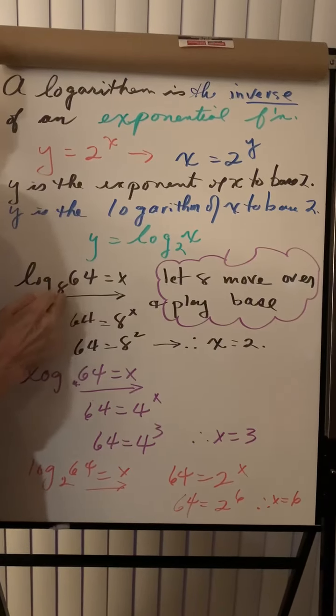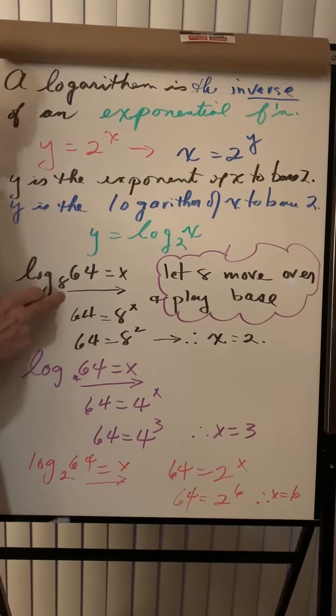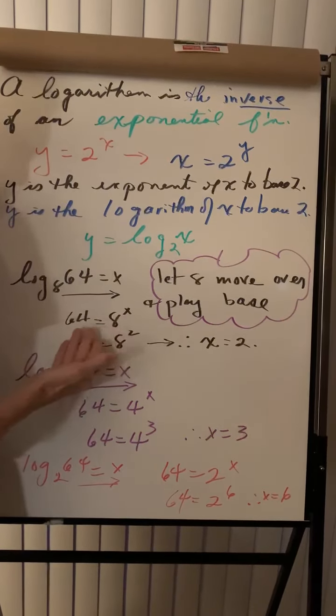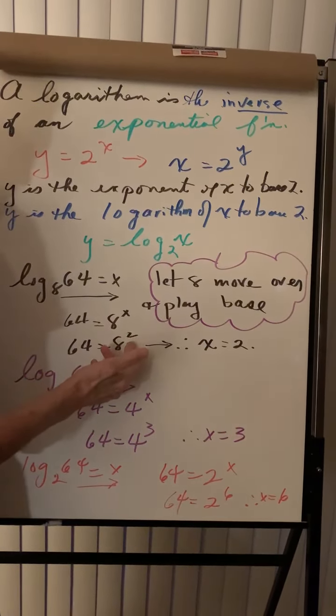Let's find the log of 64 to the base 8. Let 8 move over and play base. It's easy to see that 8 squared is 64.